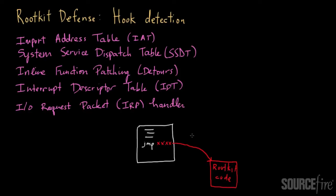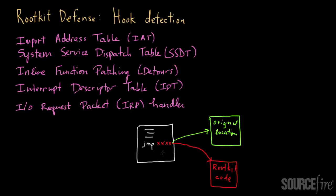Instead of going to some legitimate location where the original code resides, execution now goes to the malicious place because the rootkit has modified the original location. The key insight is that we're going to look at this address, because this address has to be specified by the rootkit as part of the modification, and it's the address that points to the malicious code. By examining this address, we can tell it's actually somewhat suspicious.